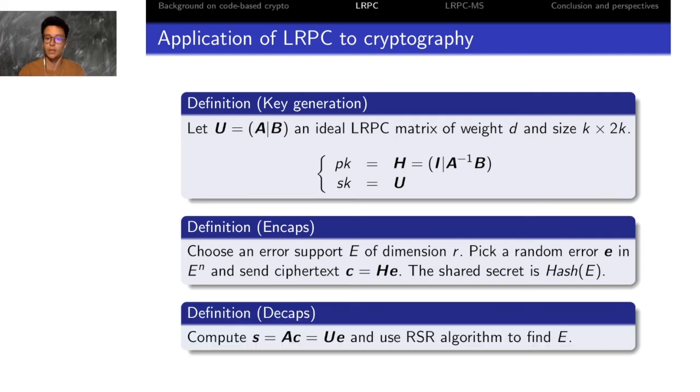To decapsulate, you can multiply the ciphertext by the first block of the secret matrix to recover the syndrome, this time not with the matrix H but with the matrix U, and then you can use the RSR algorithm to recover the shared secret E.